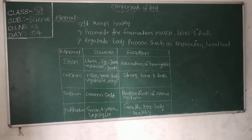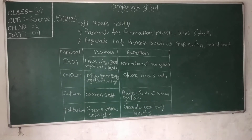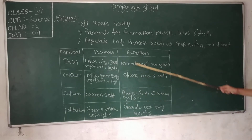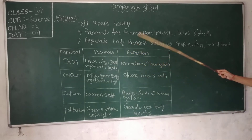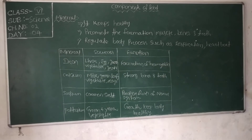Now let us discuss some important minerals, their sources, and their functions in our body. The first mineral is iron. The sources of iron are liver, eggs, meat, green vegetables, grains, and yeast. These foods are rich in iron.